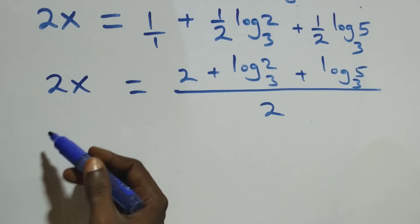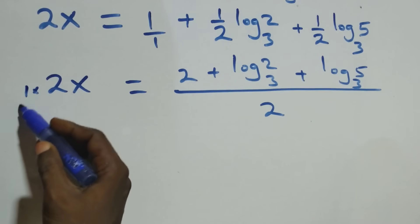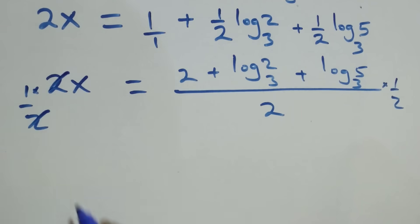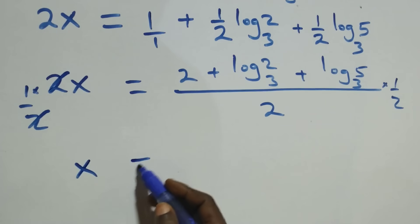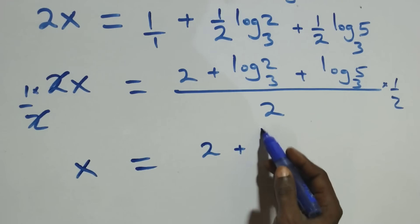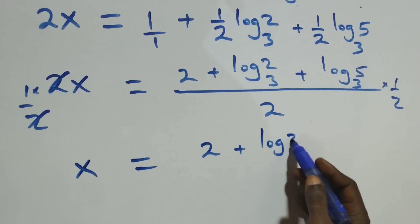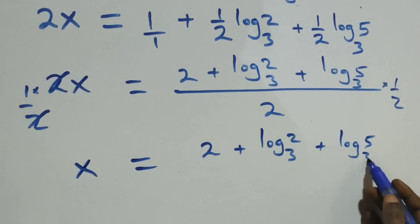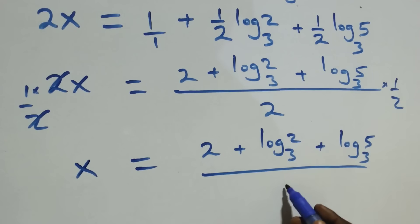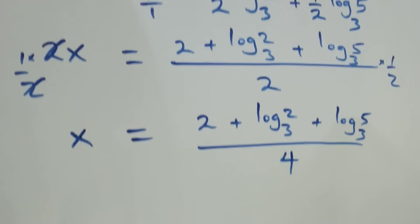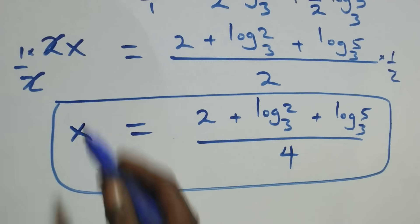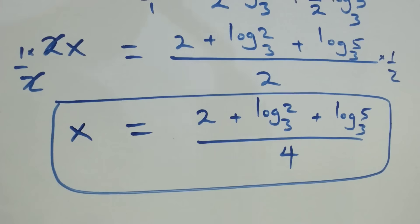Then we multiply both sides by one-half: multiply this side by one-half and also this side by one-half. The 2s cancel each other and we are left with x, which equals 2 plus log base 3 of 2 plus log base 3 of 5, all over 2 times 2, which gives us 4. Therefore, the value of x is 2 plus log₂ base 3 plus log₅ base 3, all over 4.